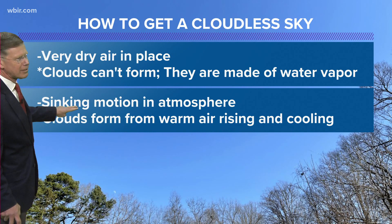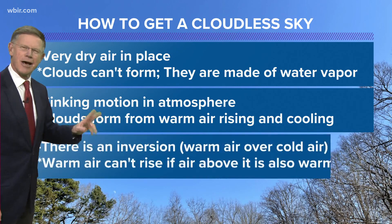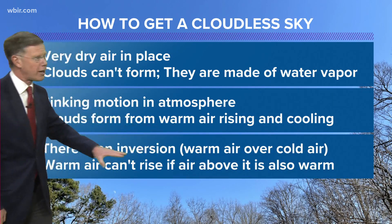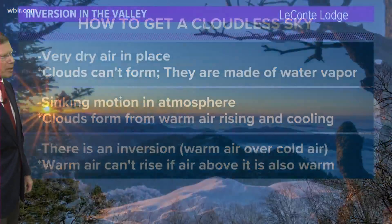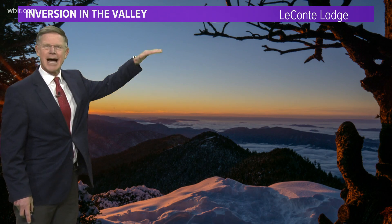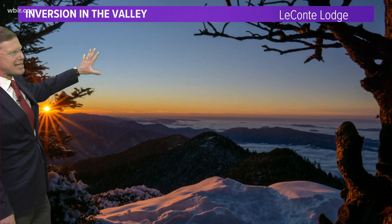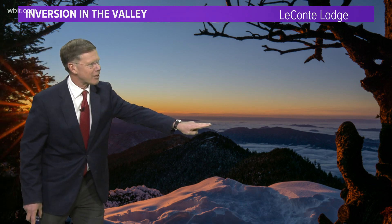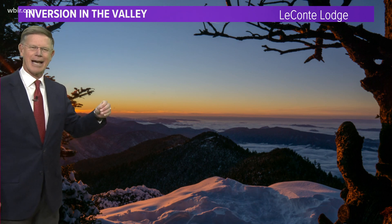Sinking motion in the atmosphere is another way, in addition to the dry air, of how you have a cloudless sky. Another way is an inversion — that's where warm air is over the cold air, and the warm air can't rise if the air above it also is warm. Here's an example of inversion: cloudless sky above. Thanks to the Lacan Lodge for this beautiful picture — clear skies and a gorgeous sunrise, and there is that deck of clouds and fog in the valleys beneath. So it's another way to get a cloudless sky.